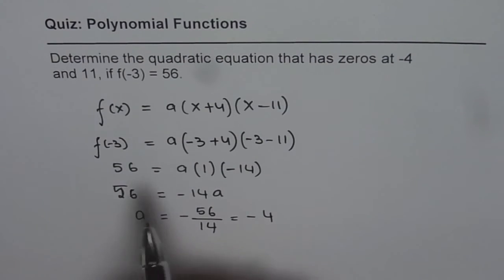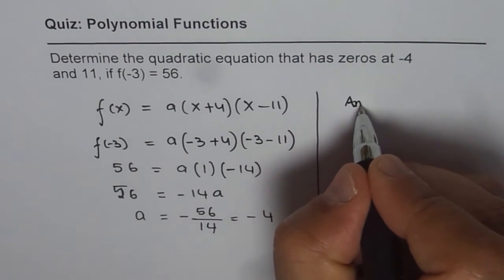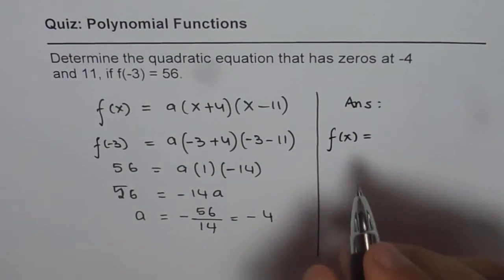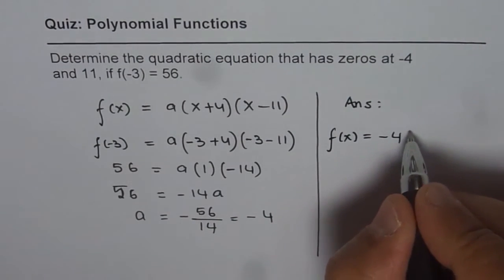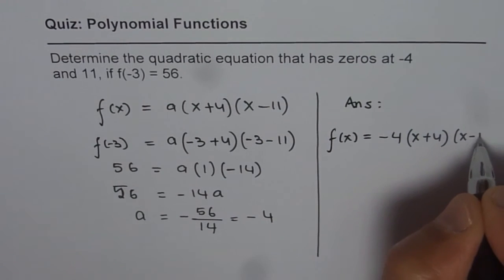So we can now write down what the function is. So the answer is f(x), the quadratic function, is -4 times (x + 4) times (x - 11).